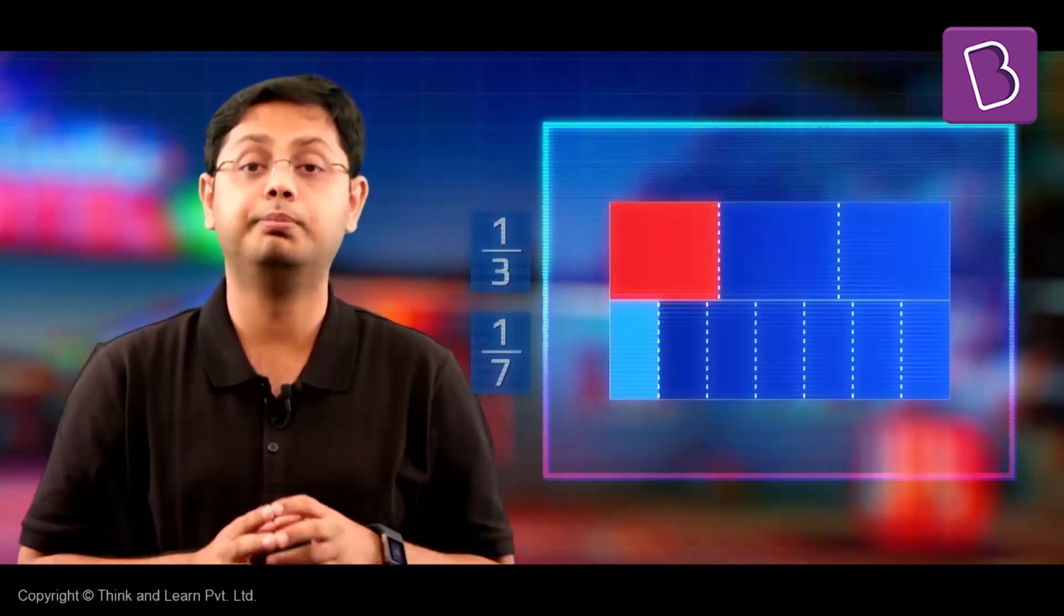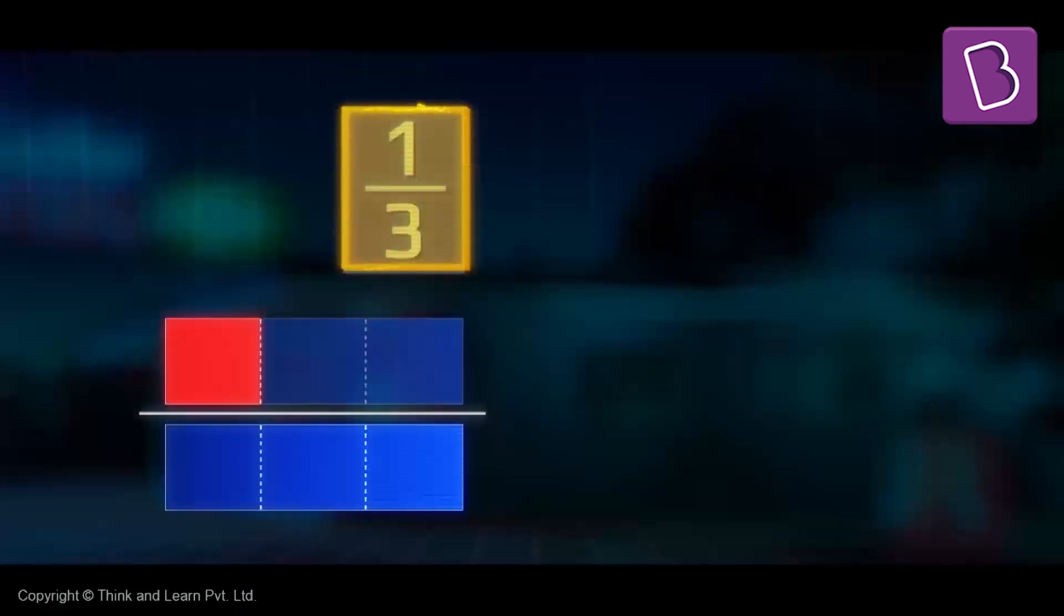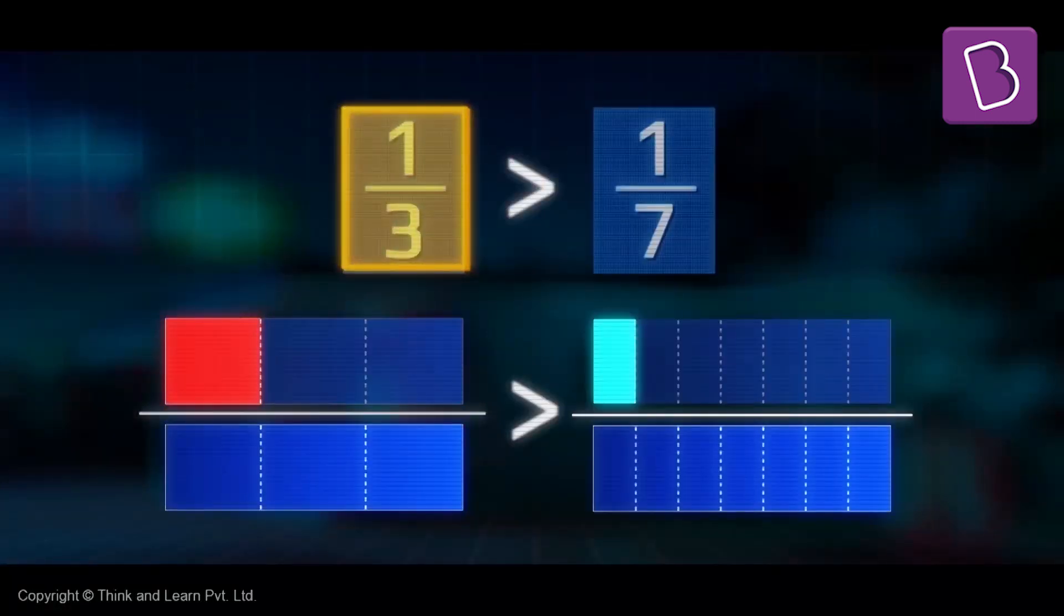Now, if I bring both these rectangles one above the other, you see that the amount of red color is greater than the amount of blue color. Hence, 1 by 3 is greater than 1 by 7.